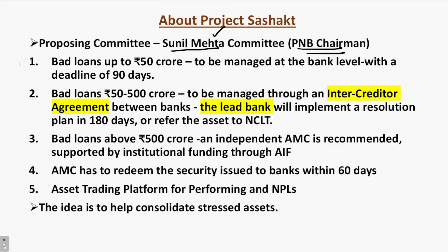Keeping that aside, what are the provisions? As I said, there is a five-pronged strategy for resolving non-performing assets. Number one: assets or bad loans which are up to 50 crores. It has divided stressed assets into different classifications based on the amount of bad loans. For bad loans up to 50 crores, they are to be managed at the bank level with a deadline of 90 days.